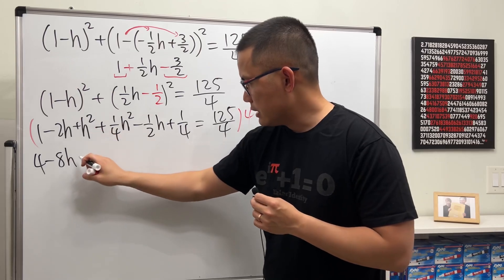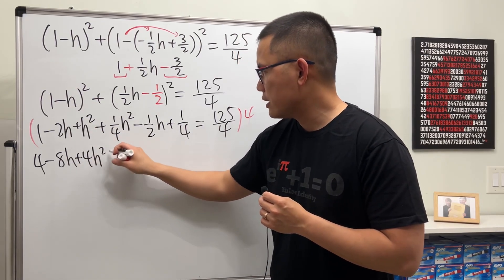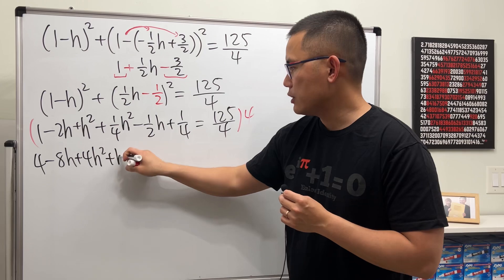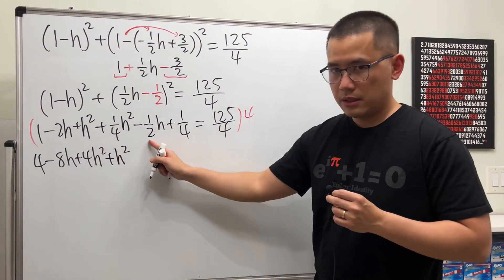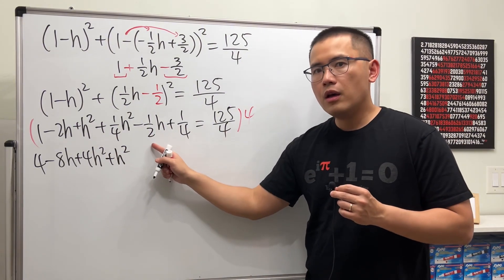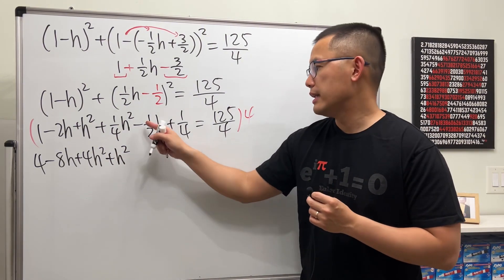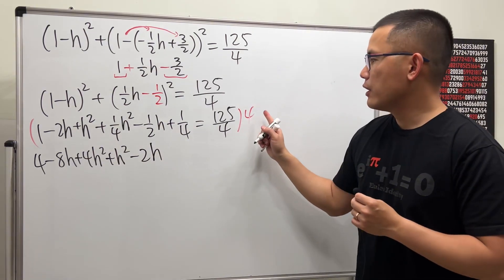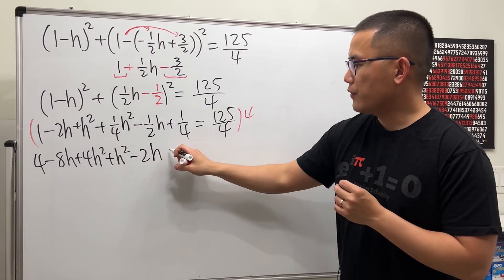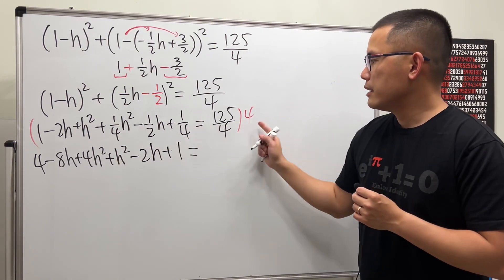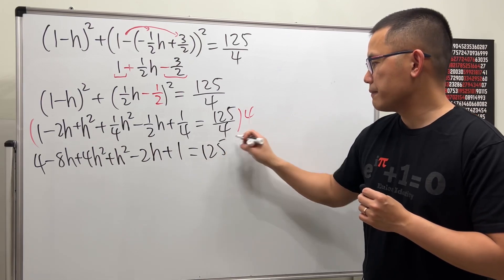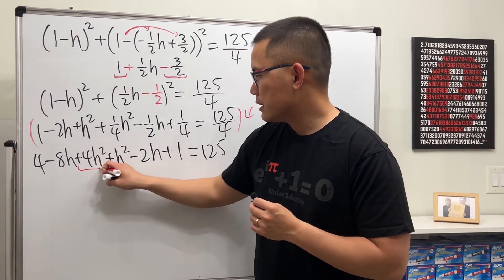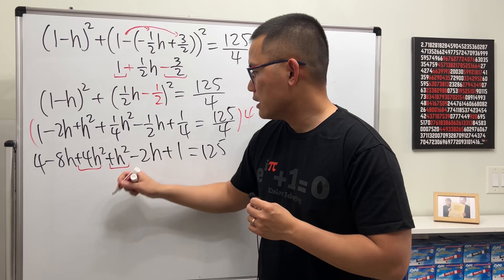Four times h squared is plus 4h squared. The next term simplifies: plus h squared. Then four times one half is 2, and that's a minus, so minus 2h. Four times one over four is plus 1. And this times 125 over 4 is just 125.